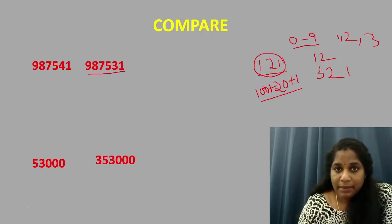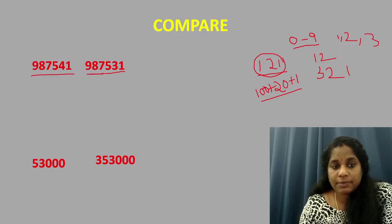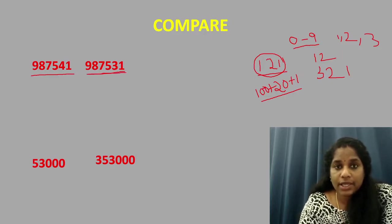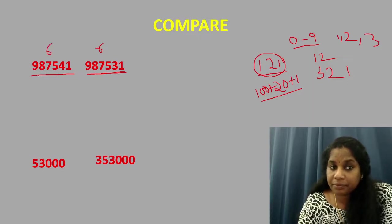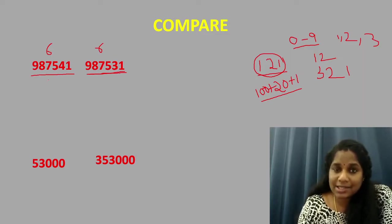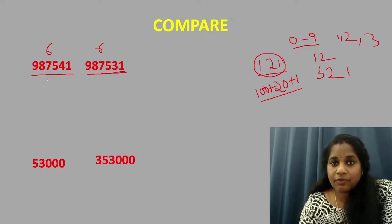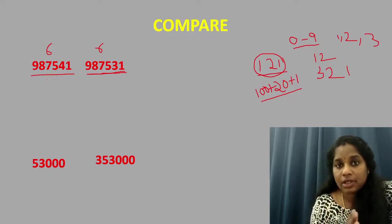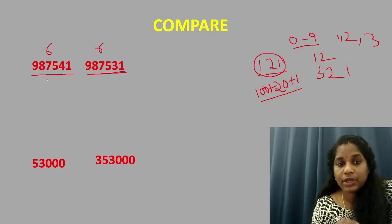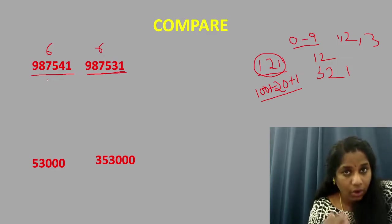So let us come back to our question. Here we have two numbers. So the first step which helps you to understand which is a greater number is number of digits in the number. Here you have six digits. Here also you have six digits. So in this case, number of digits is not going to be of much help. So what is the second step? Second step is to find out the place value of each digit from the extreme left.